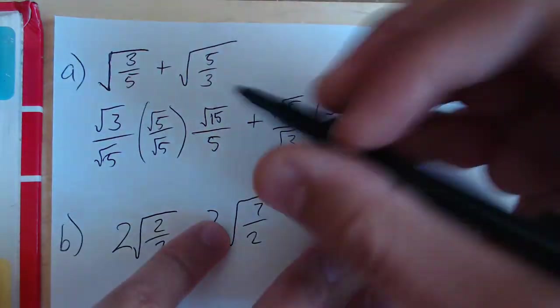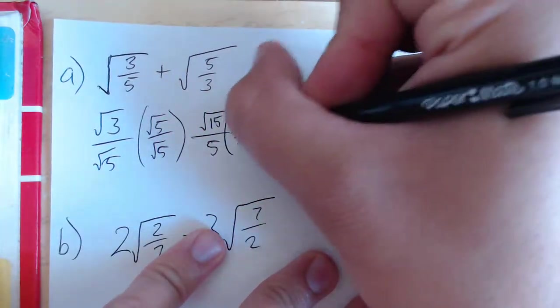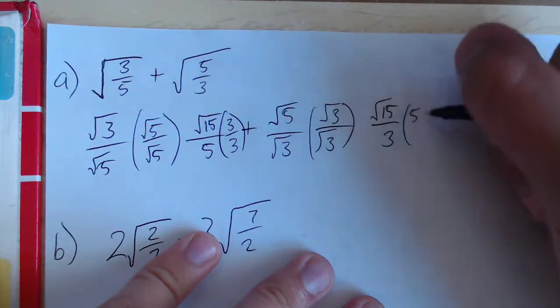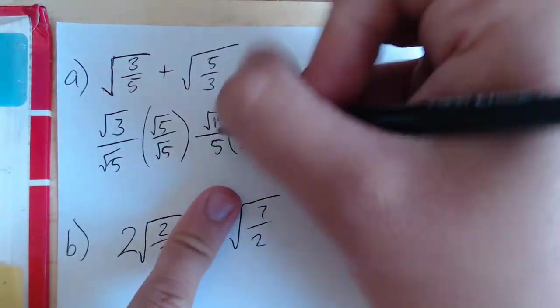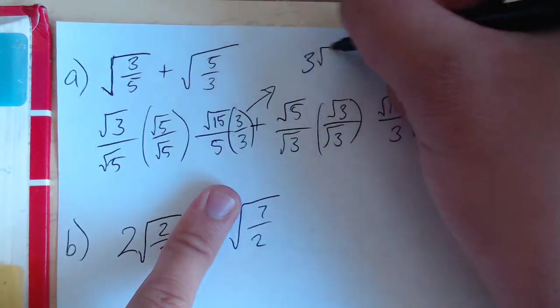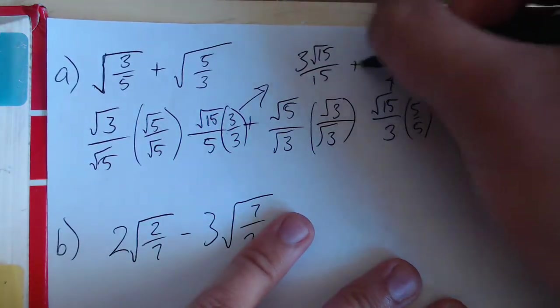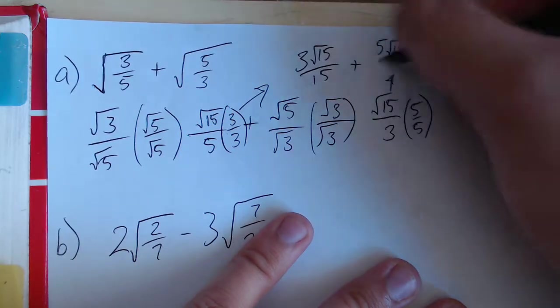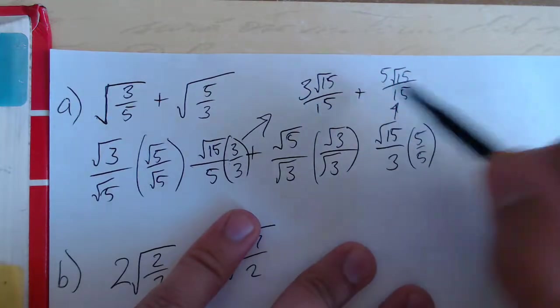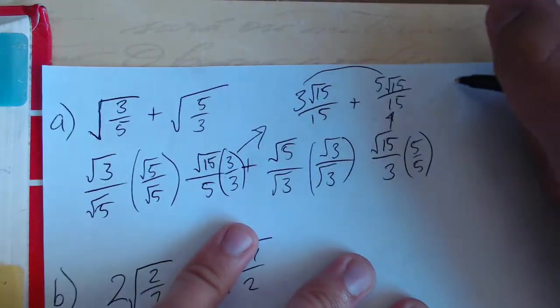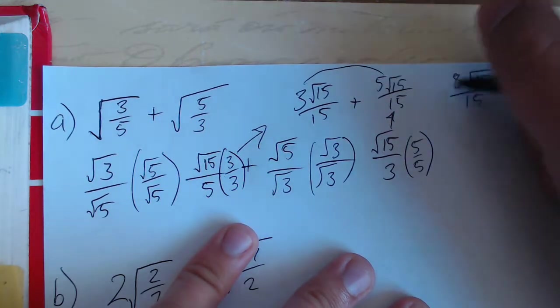But we have to get a common denominator. So the common denominator between 3 and 5 is going to be 15. I have to multiply 5 times 3 over 3, and I've got to multiply 3 times 5 over 5. So we're doing the same step again. And this number right here is going to turn into 3 root 15 over 15, and this one becomes 5 root 15 over 15. Now what we see is in the numerator we have like terms that can be added. So 3 root 15 plus 5 root 15 gives us 8 times the square root of 15 over whole number 15. And that's our final answer.